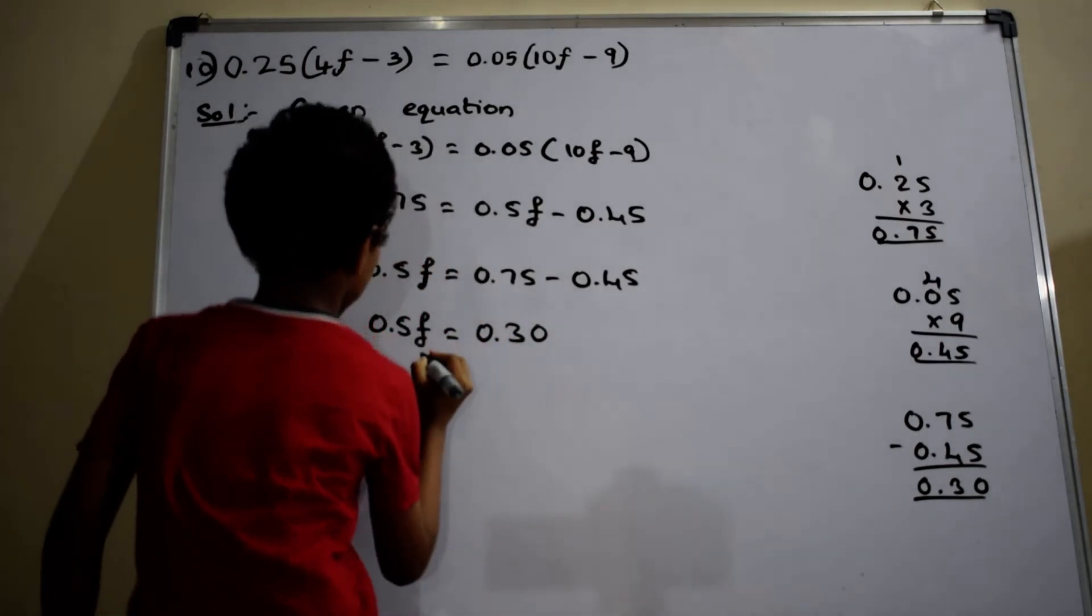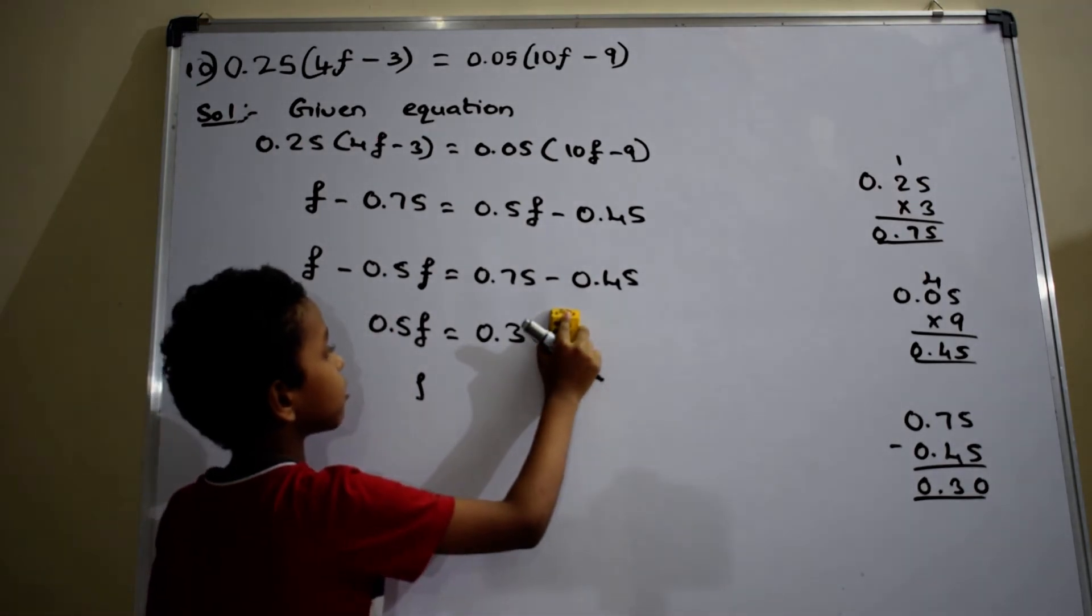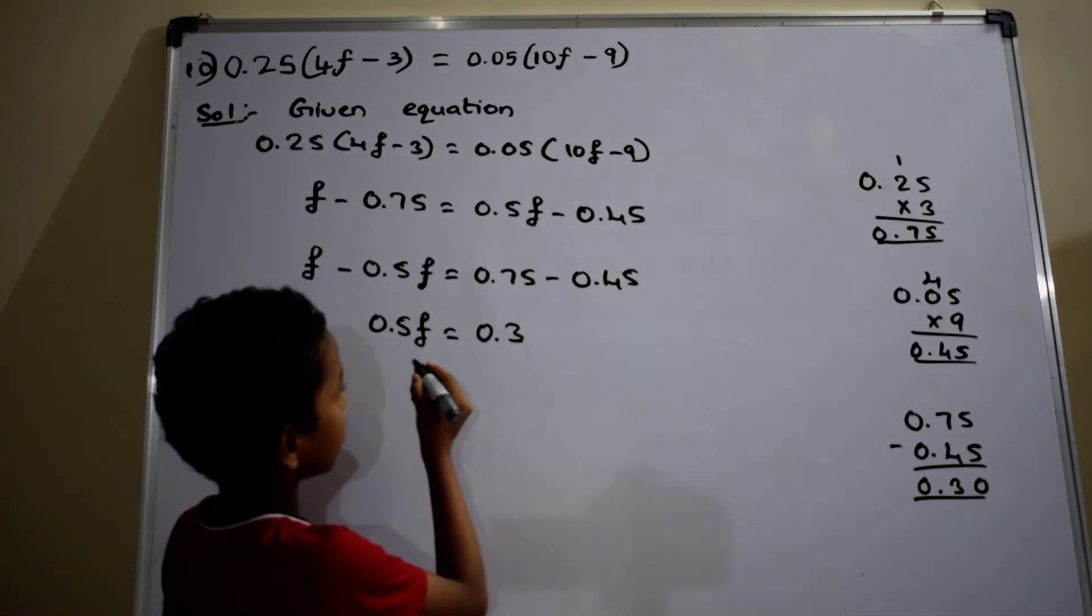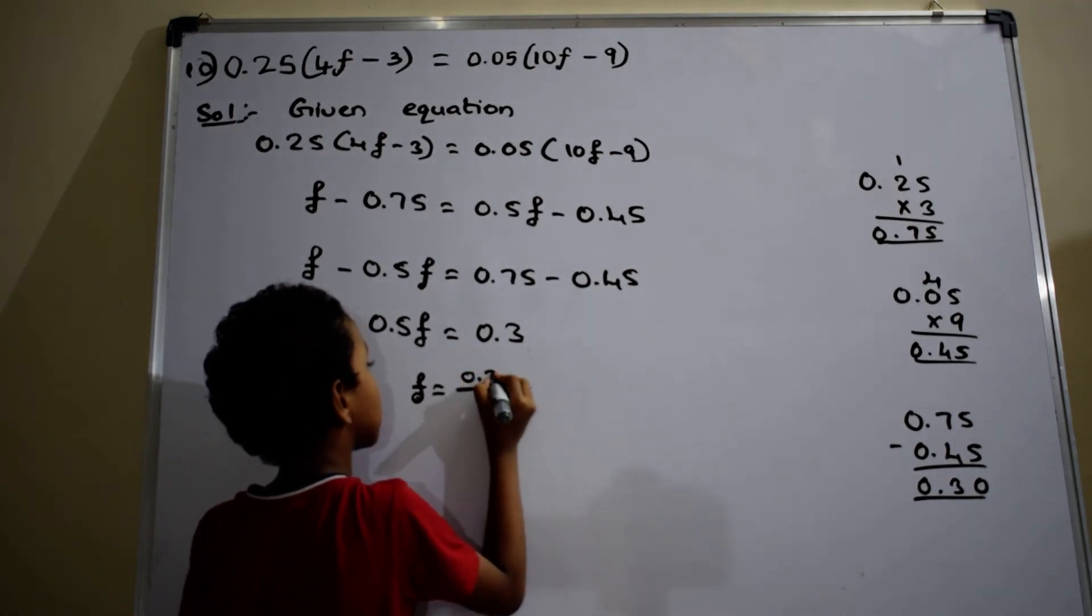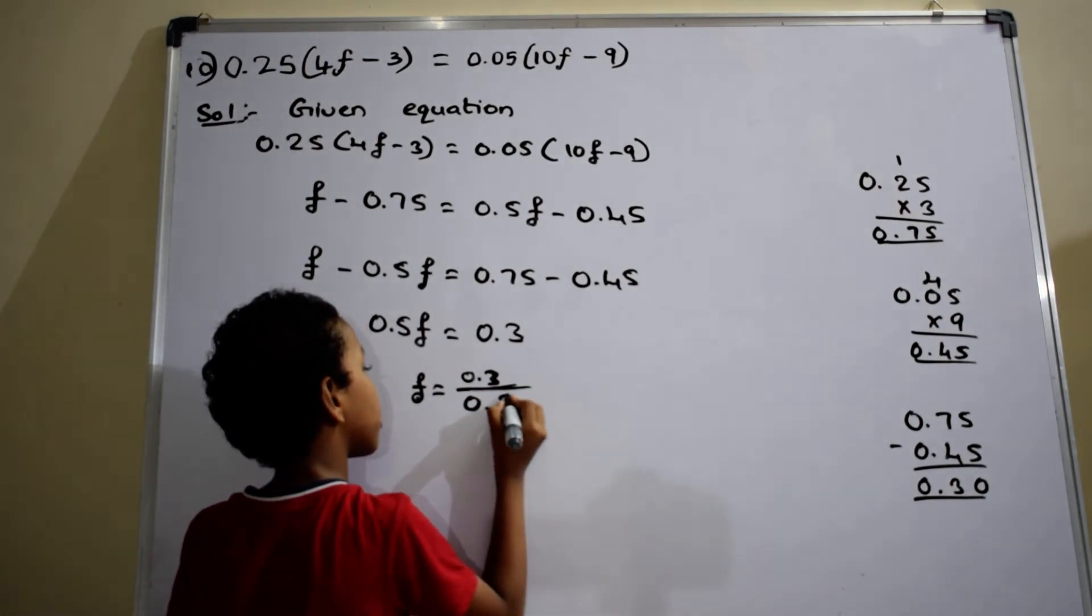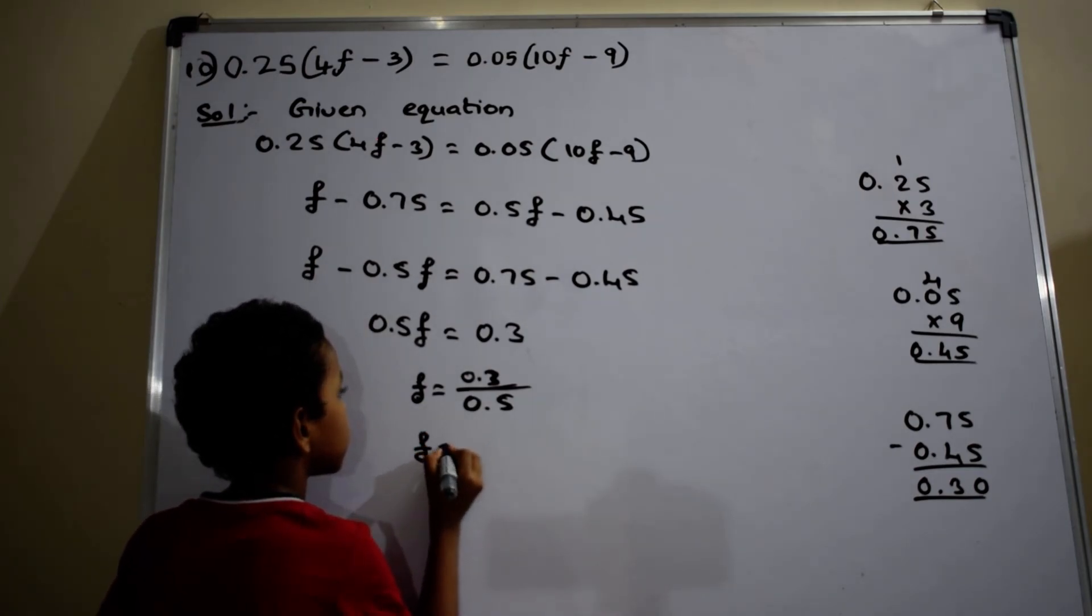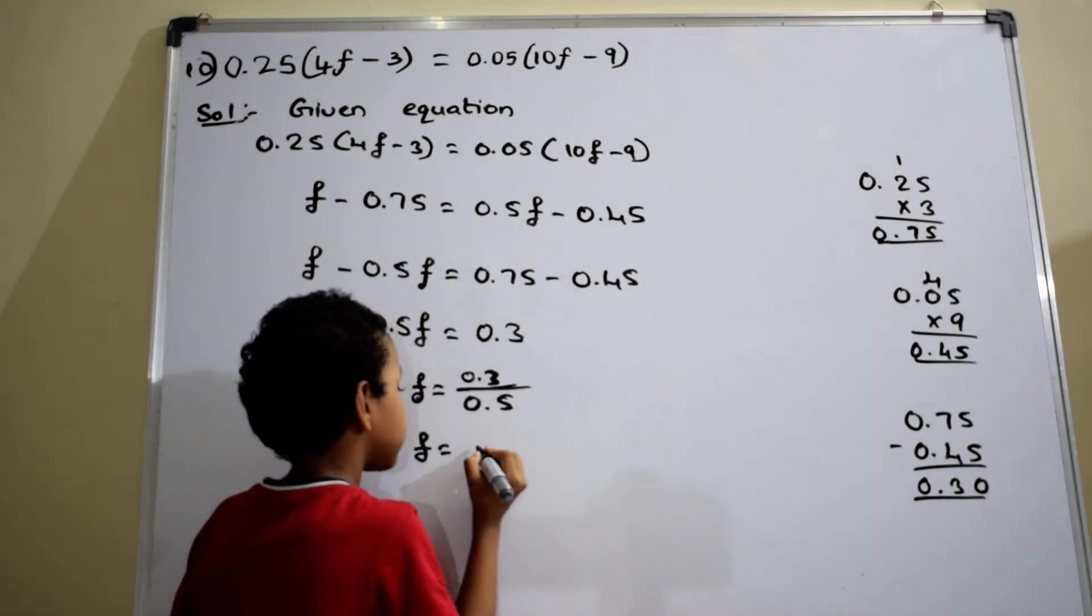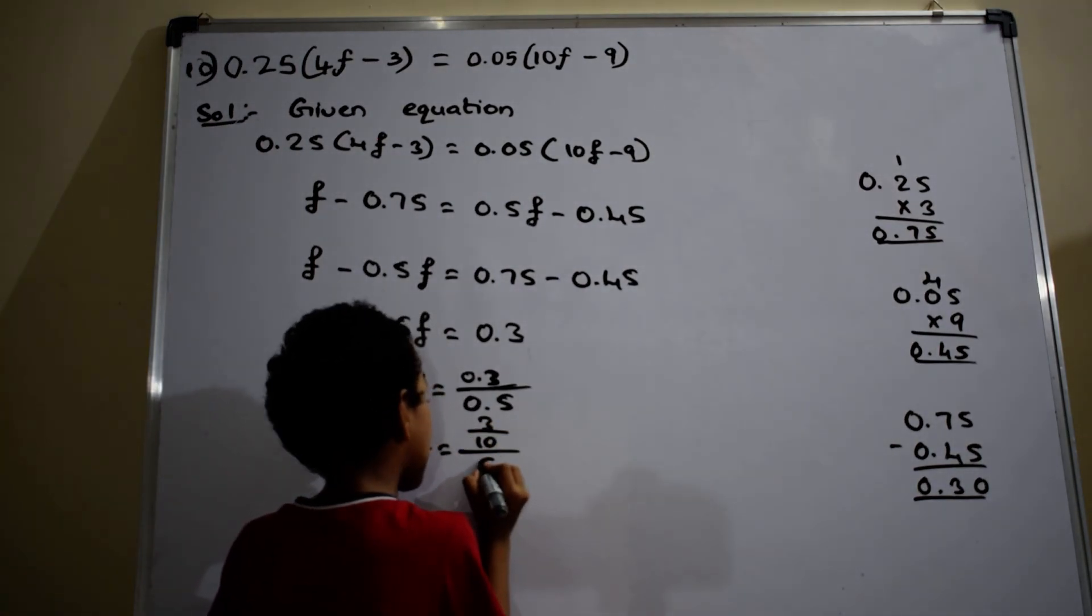f equals to 0.30 can be written as 0.3. f is equal to 0.3 by 0.5. f is equal to 0.3 by 0.5 can be written as 3 by 10 divided by 5 by 10.